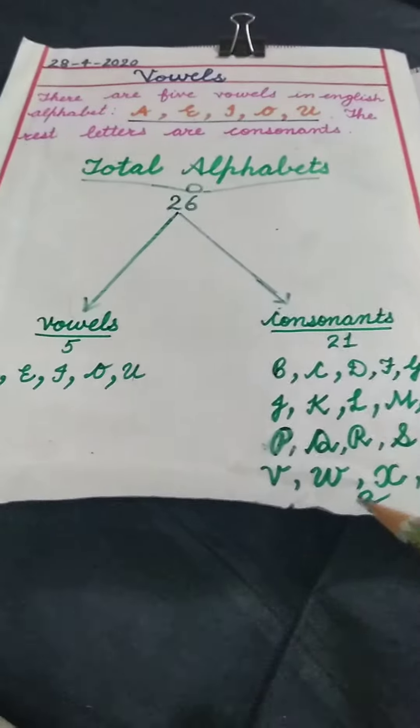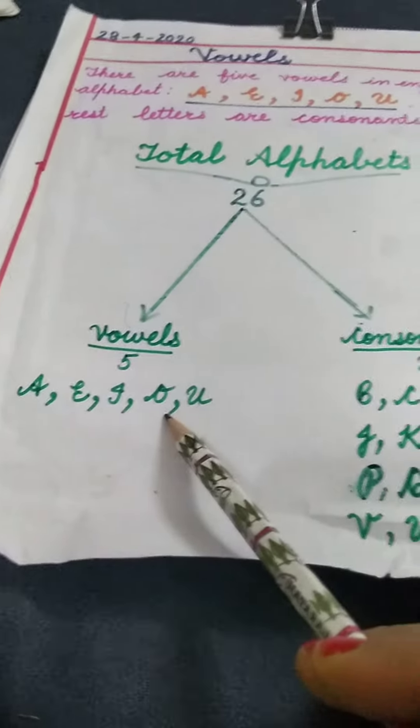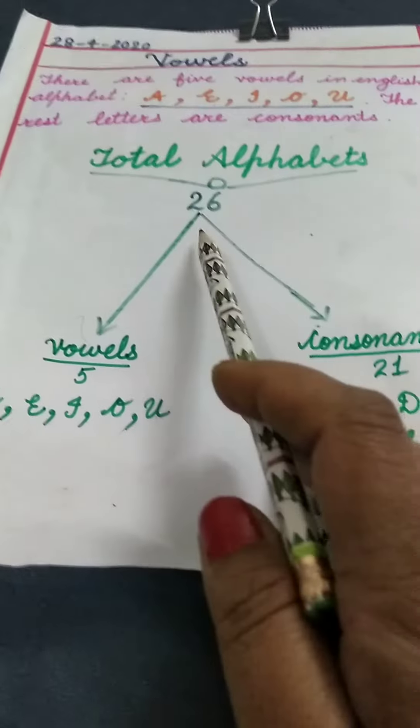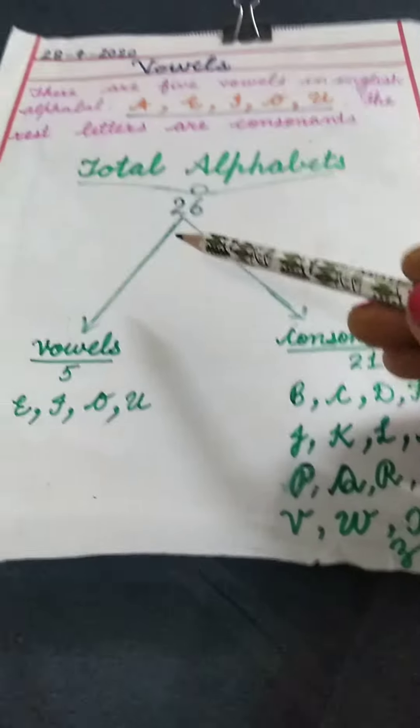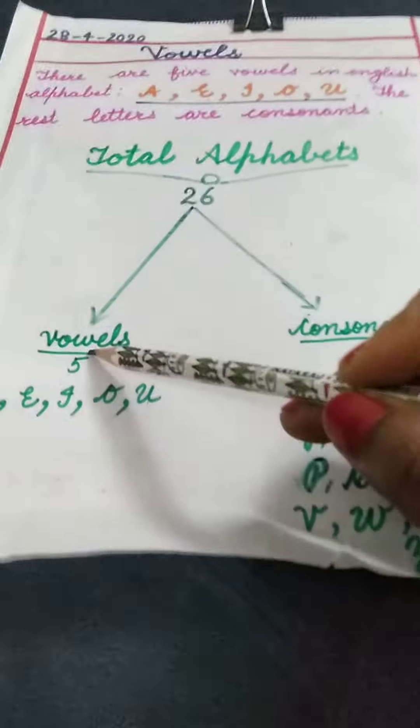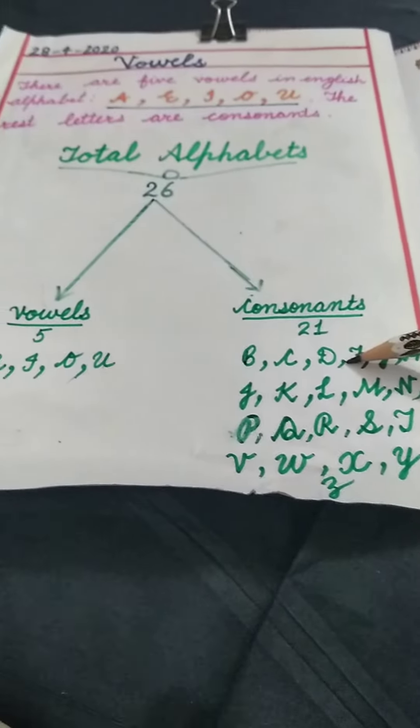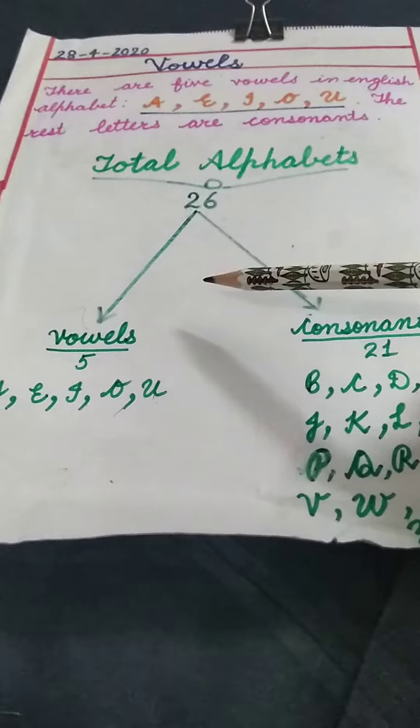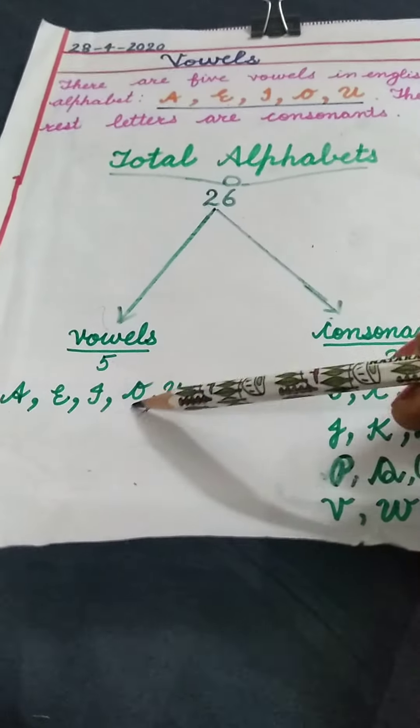And these are vowels, with a total number of letters: 26. So now you know that in our alphabets, five are vowels and twenty-one are consonants. Now we'll practice the vowels—A, E, I, O, U—and their sounds.